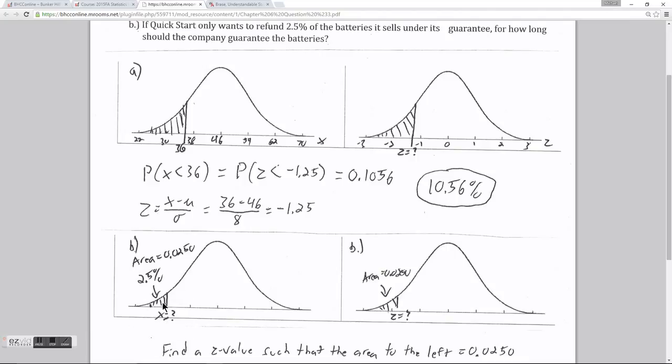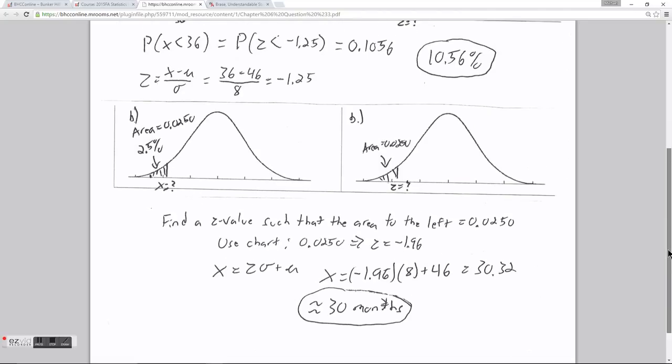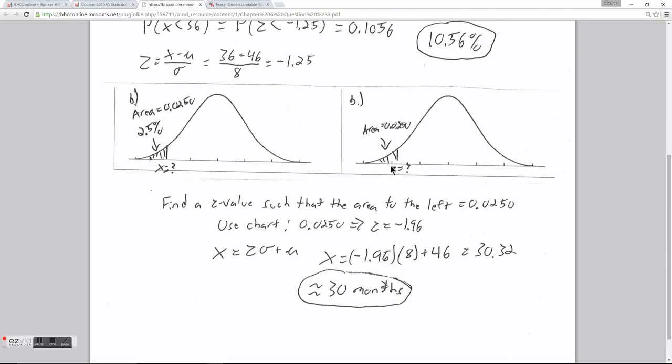This is an unknown value. But on the normal curve, 2.5% is equivalent to an area of 0.025. So what I'm going to do is on the standard normal curve, I'm going to look up a z value that has an area of 0.025 to the left of it.